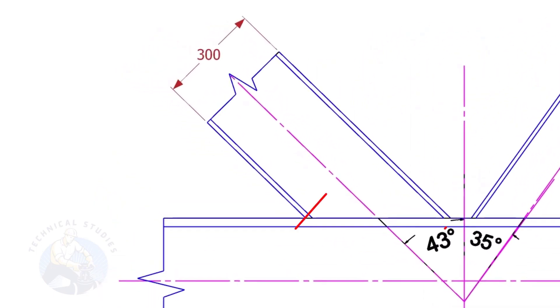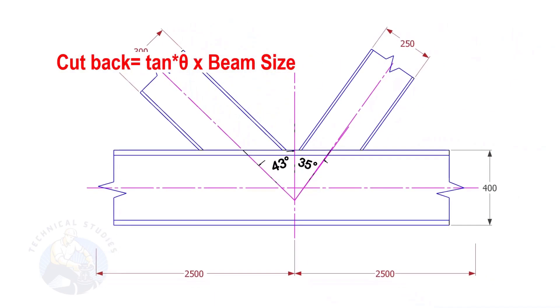Let us calculate the cutback of this beam. The formula to calculate the cutback is tan degree multiplied by the size of the beam.